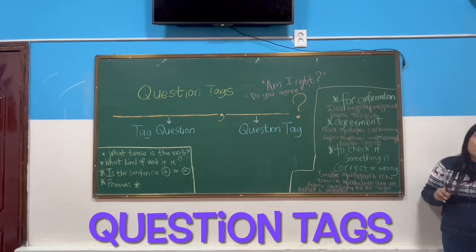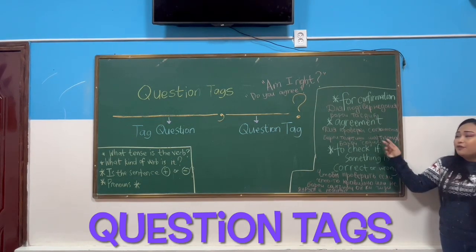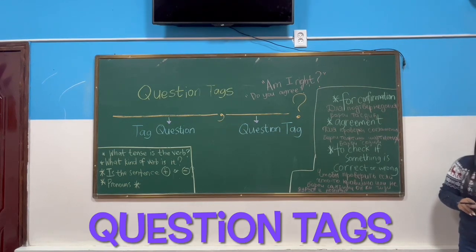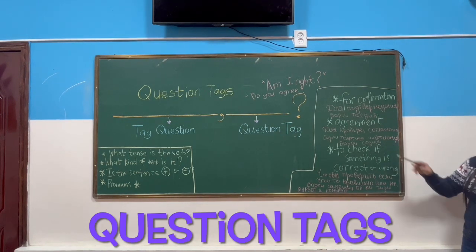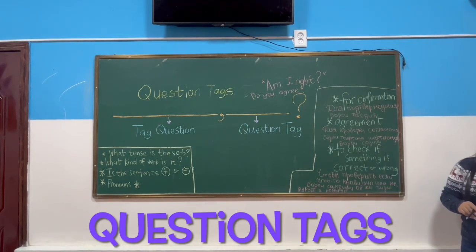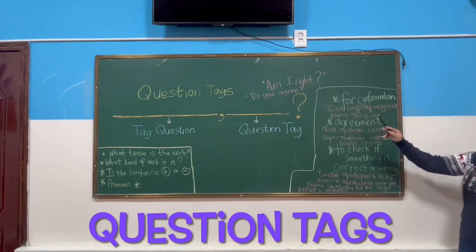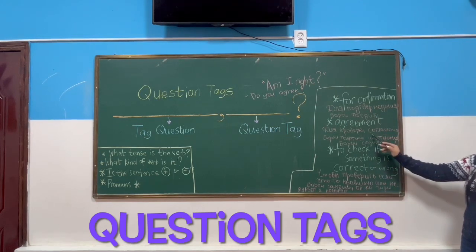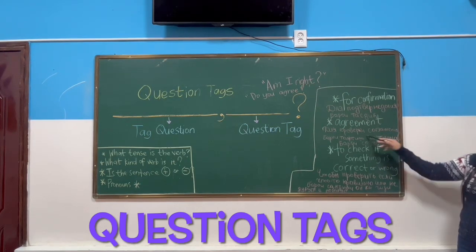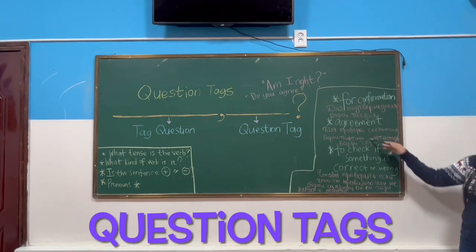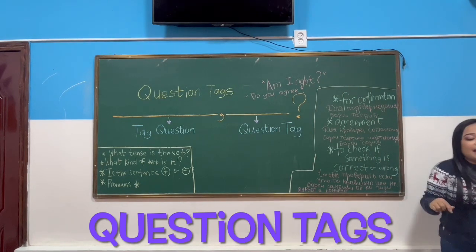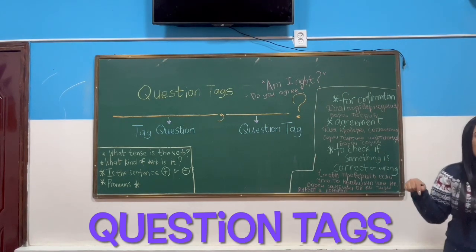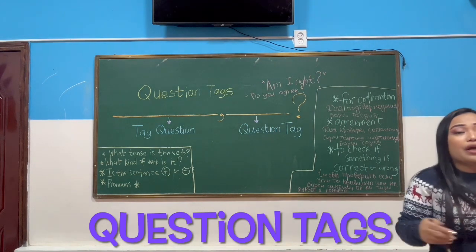The second use of Question Tags is for agreement. We use Question Tags to seek agreement with the other person.